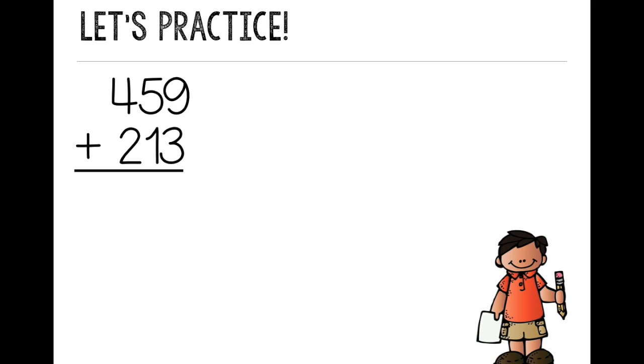Let's try one more. 459 plus 213. And I follow the same steps. First, I write the number in expanded form. So 459. I look at my hundreds place, and I have 400. Then I look at my tens place. There's a 5, so that would be 50. Then I look at my ones place. It's a 9, so I write 9. So 459 is equal to 400 plus 50 plus 9.